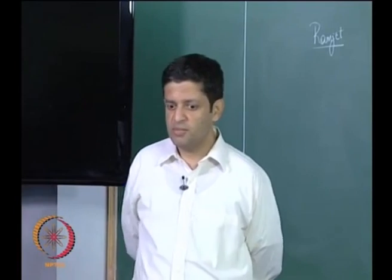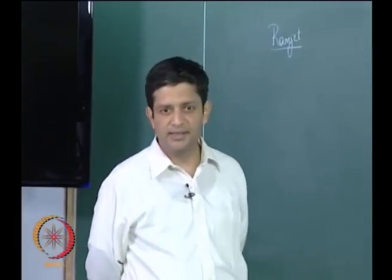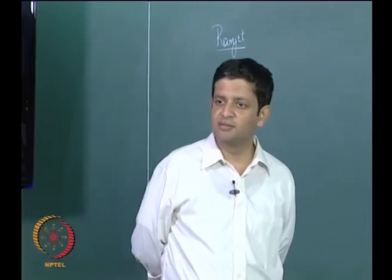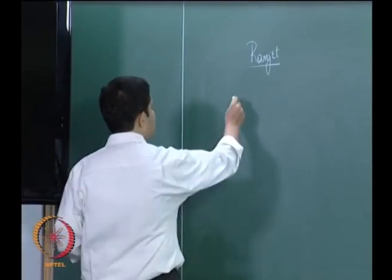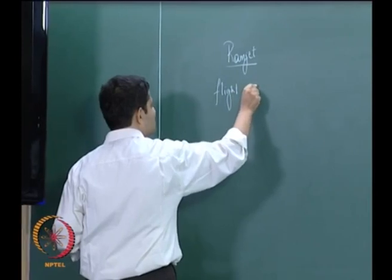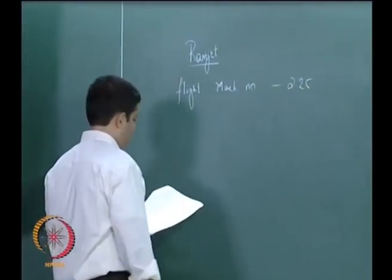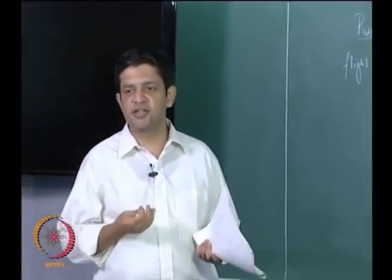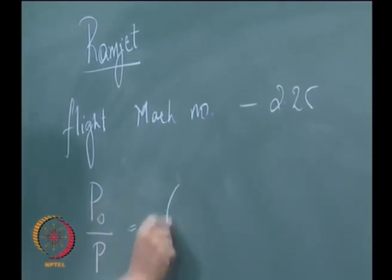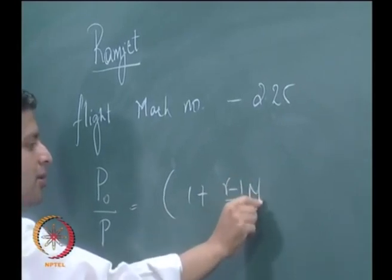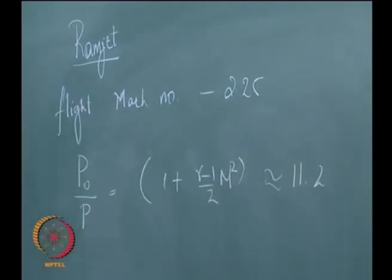The concept of a ramjet is evolved from a turbojet. The idea is: let us say I am flying at a very high Mach number of around 2.5. If I have a flight Mach number of around 2.25, then the stagnation pressure ratio P0/P goes as 1 plus (gamma minus 1)/2 times M squared, and you will find this is around 11.2.